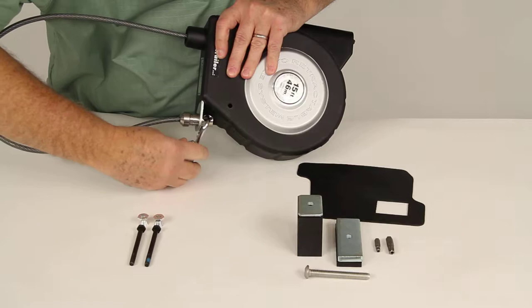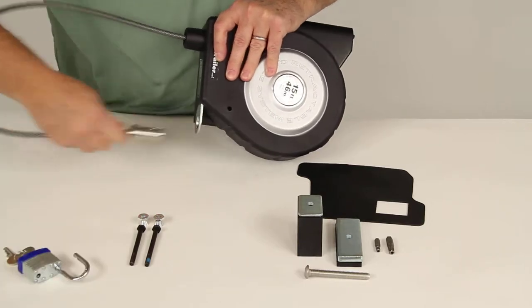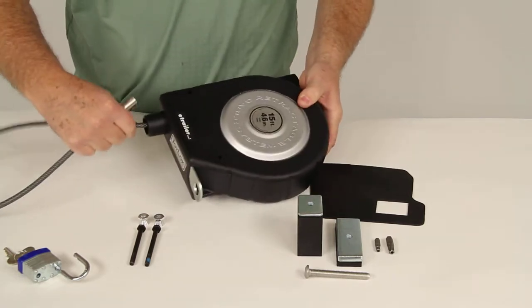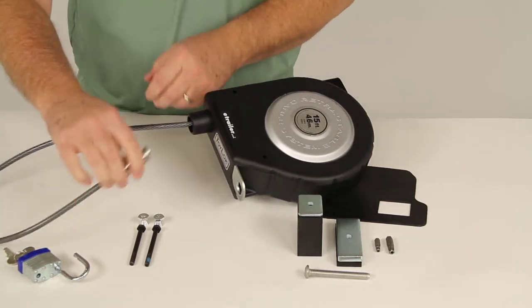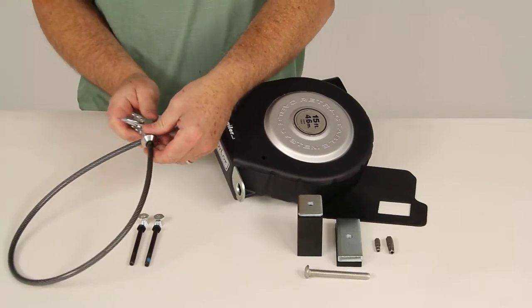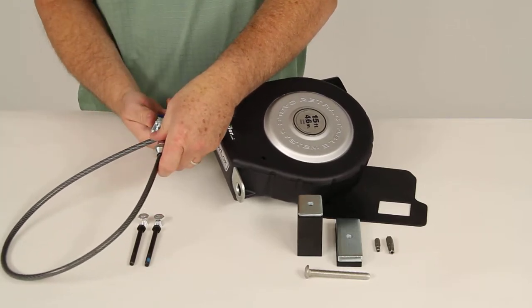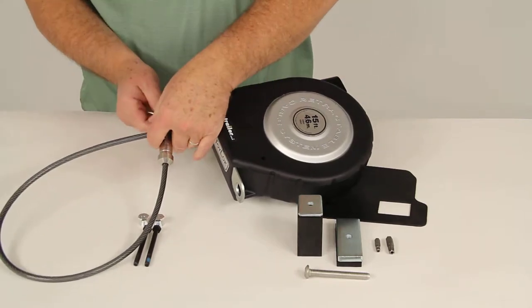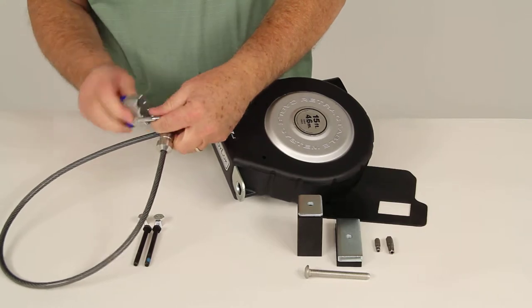The other way would be just to run the cable back to the cable itself. Let me set this down here. If you just run this back to the cable, run the padlock through there and then around the cable, you can lock it in position just like that. So you can lock it that way also. Either way would work fine.